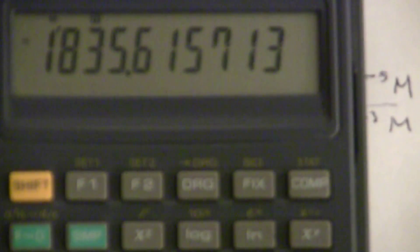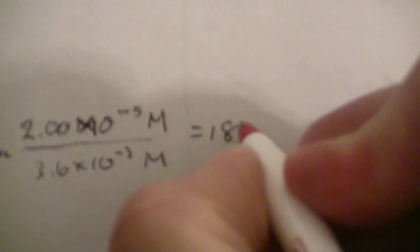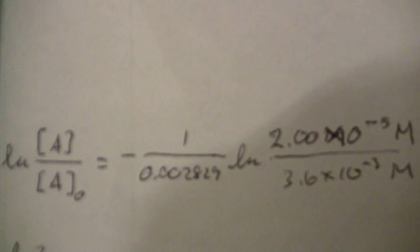All right, so divide by negative 0.002829, 0.002829 negative equals 1835.61. Okay, or 1835.